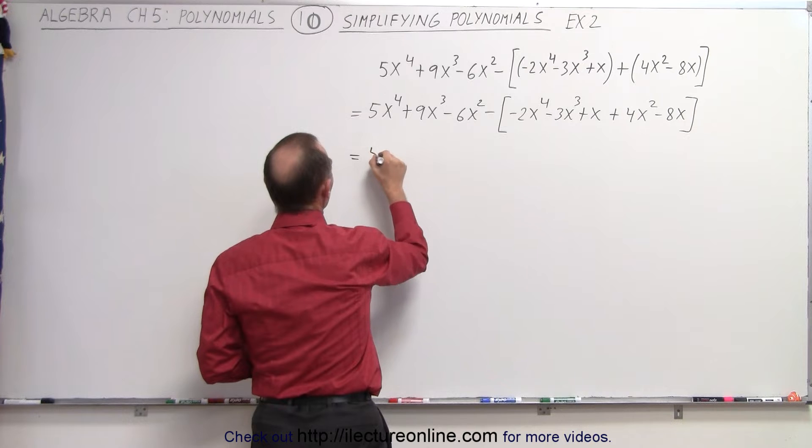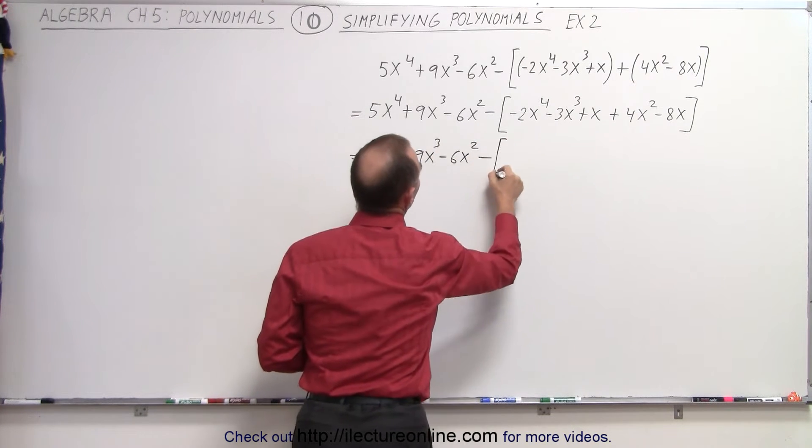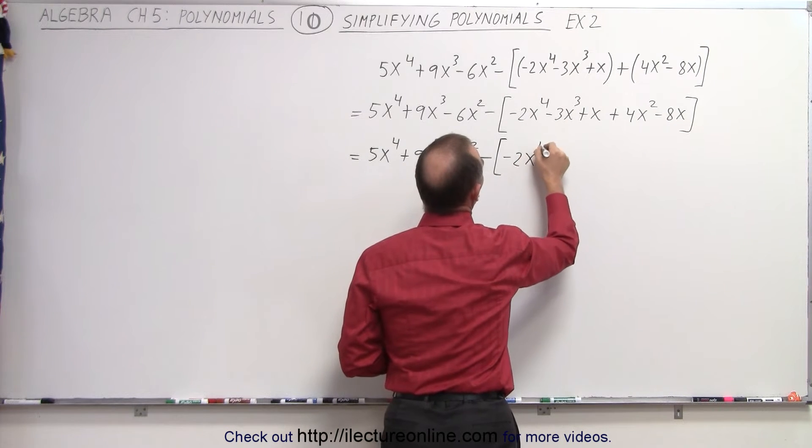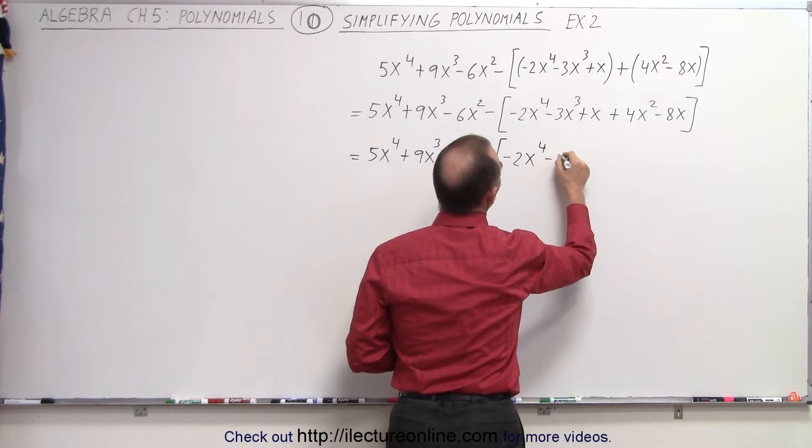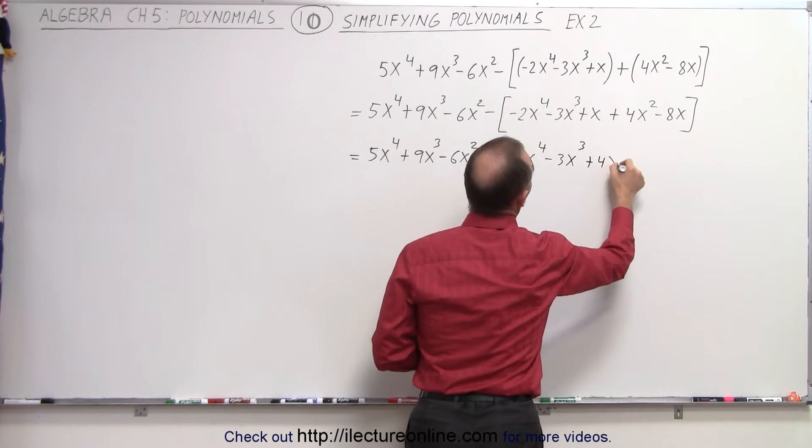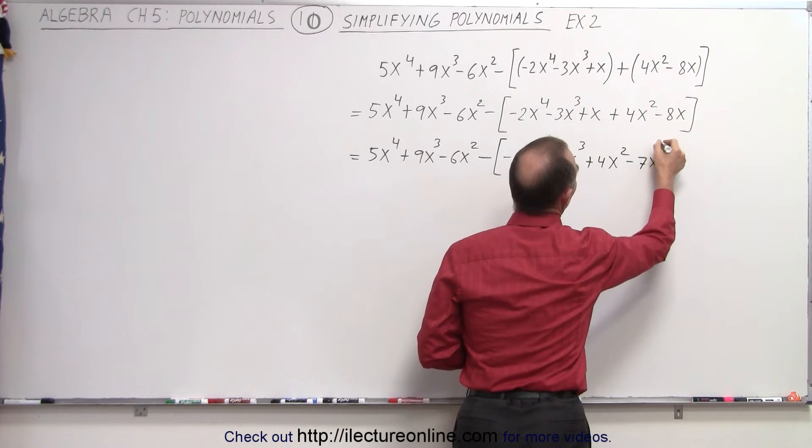So this can then be written as 5x to the 4th. We still keep the negative sign here. We haven't used it yet. So we have a minus 2x to the 4th. We have a minus 3x cubed. We have a plus 4x squared. And a plus x minus 8x becomes a minus 7x.